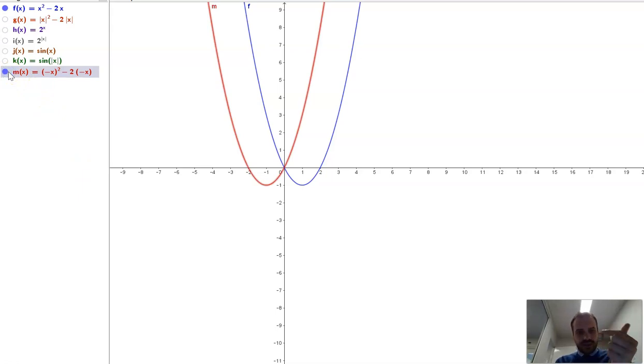And you can see that whole thing's being reflected in the y-axis. It's being flipped around the y-axis. So what sort of reflection is really happening when we do this absolute value thing?